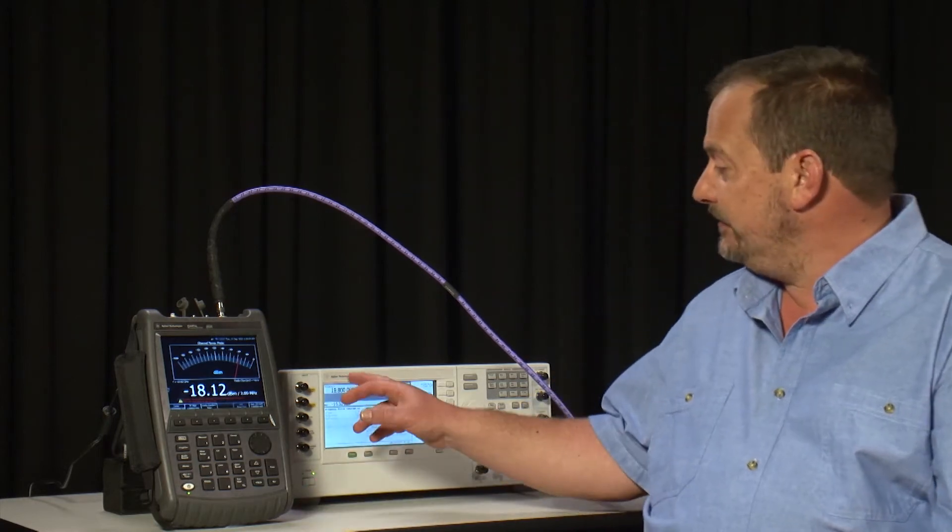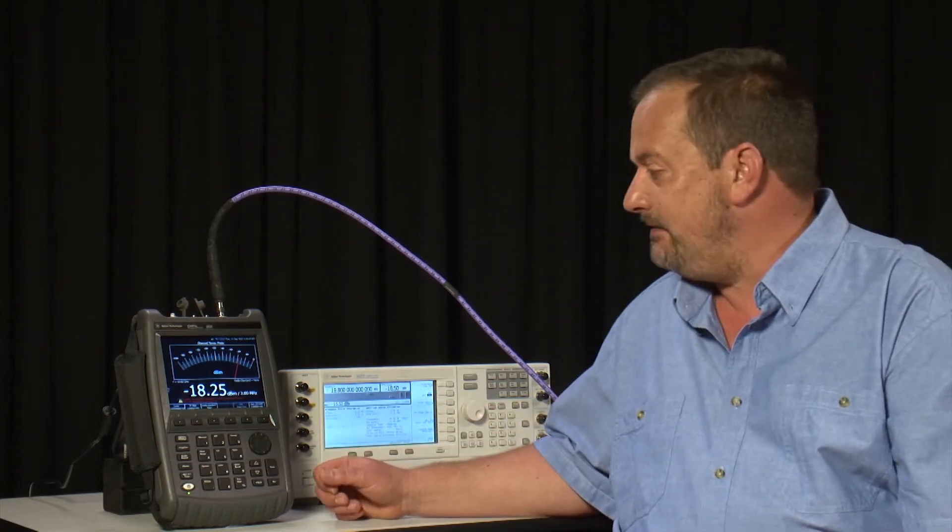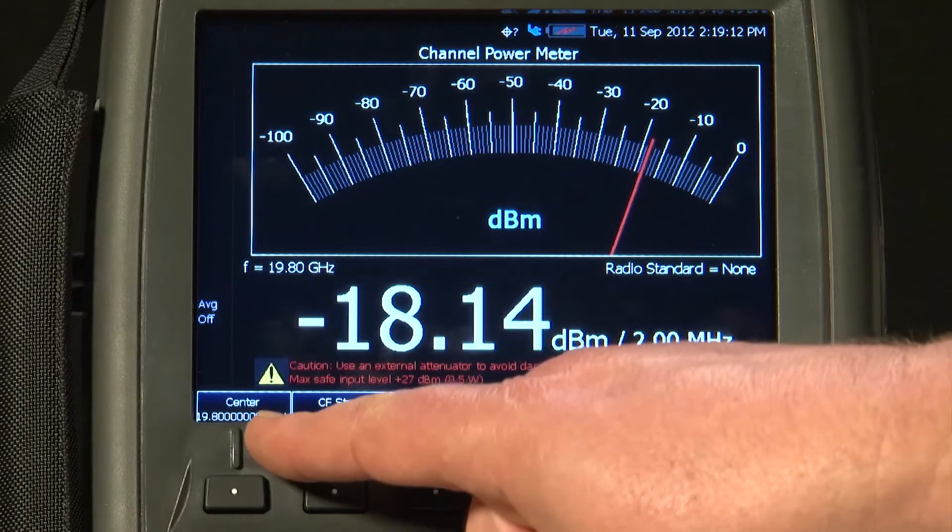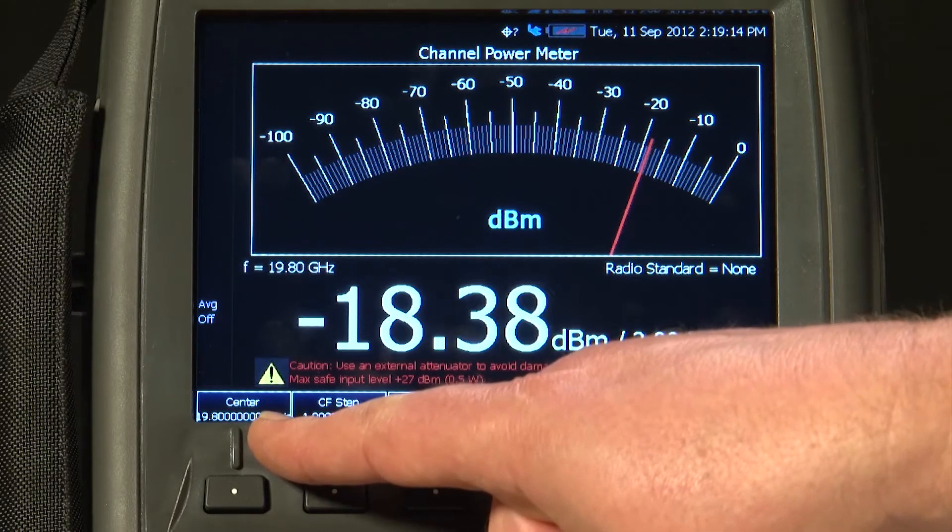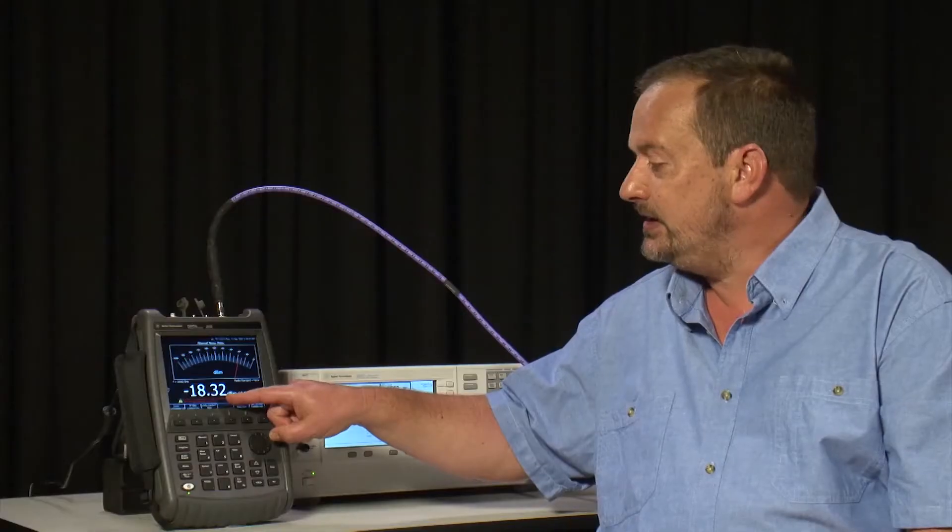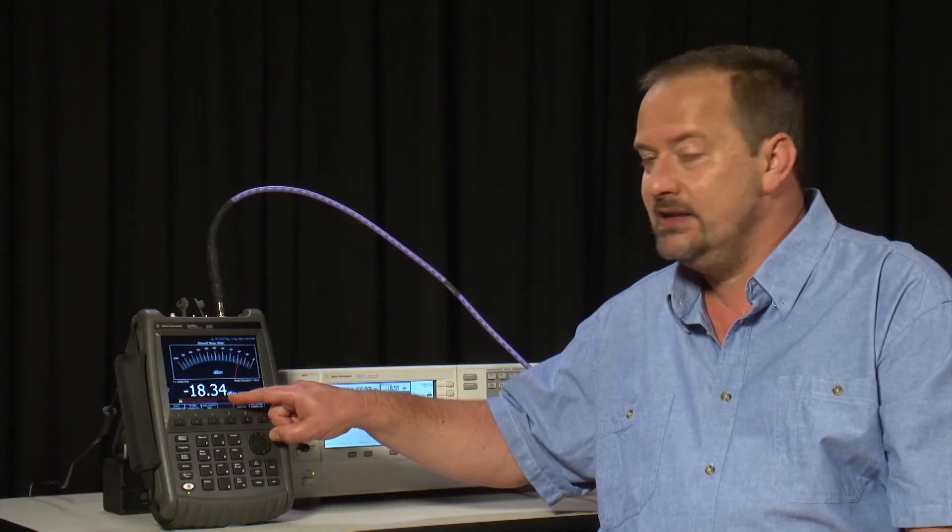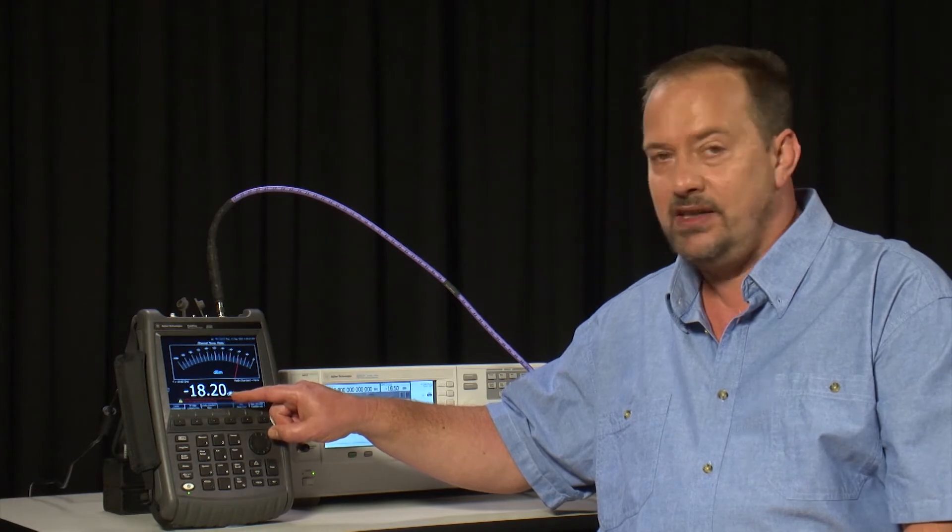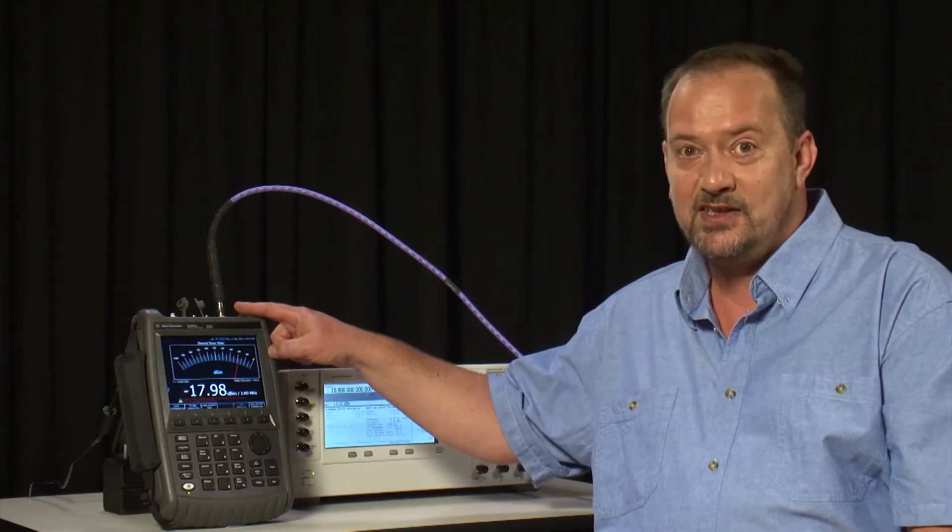So here we are still generating a 19.8 GHz spread spectrum carrier, and we have set the center frequency to 19.8 GHz. There is a red warning on the screen here, which is just a little reminder that if you are connecting directly to a transmitter, you really ought to think about also inserting an external attenuator.